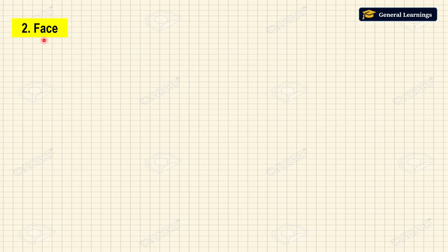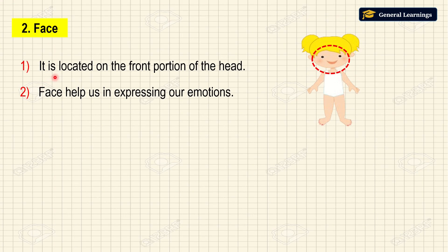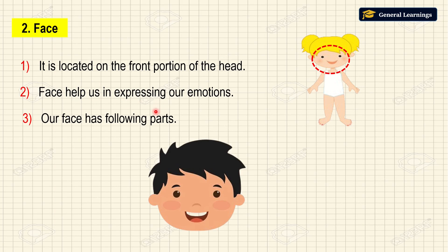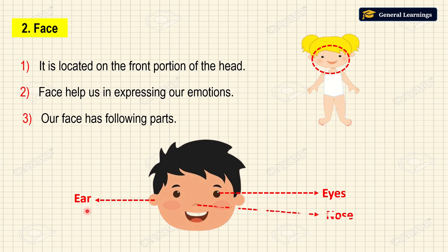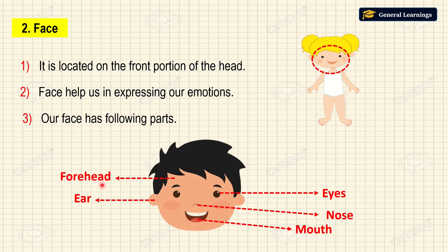Next we will see our face. It is located on the front portion of the head. The face helps us in expressing our emotions. Let us learn each part of the face: eyes, ear, nose, mouth, forehead, teeth, cheek, chin.